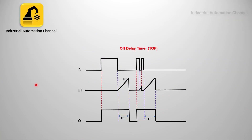Here you see the function diagram for TOF. As soon as you turn on the input, the output turns on. The elapsed time only starts to count when you turn off the input. When the elapsed time reaches the preset time, the output will be turned off. If you turn the input on and off again before the elapsed time reaches the preset time, the elapsed time will be reset.